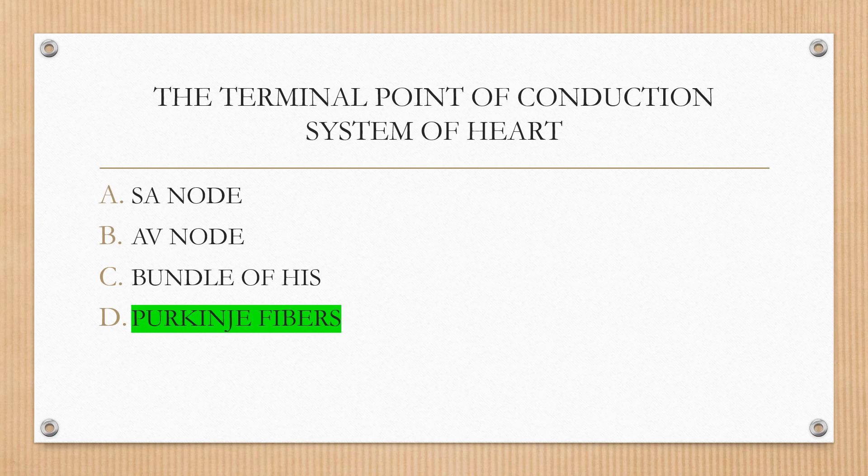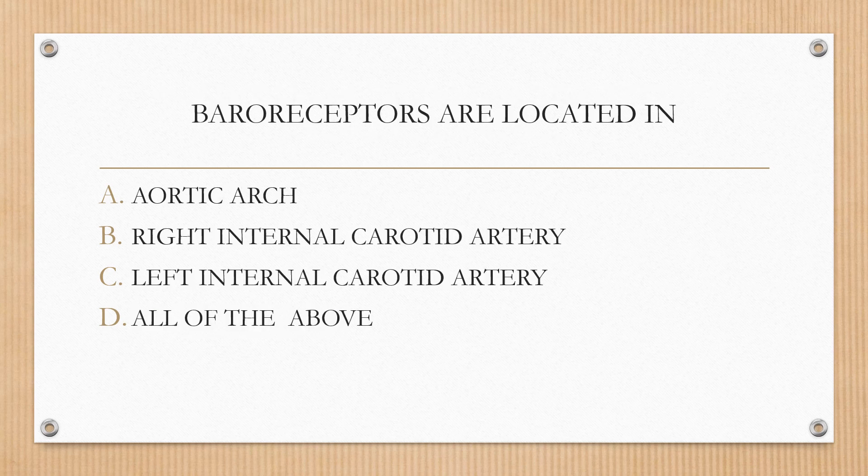Next question. Baroreceptors are located in: option A aortic arch, option B right internal carotid artery, option C left internal carotid artery, option D all of the above. The correct answer is option D, all of the above.